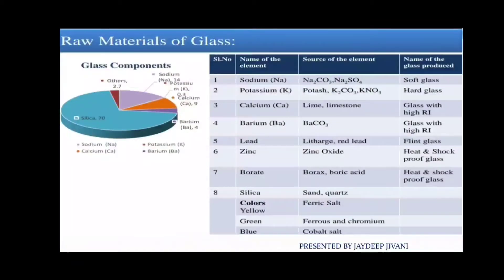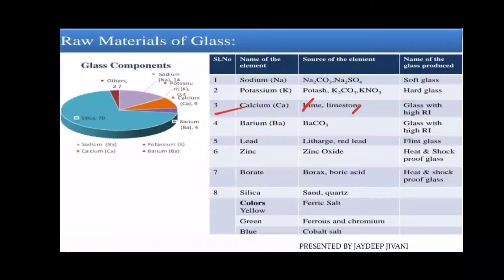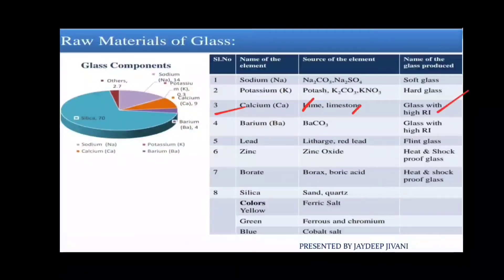The next element is calcium. Calcium is obtained from lime or limestone. Calcium is used for glass with a high refractive index — where a high refractive index is needed, calcium is used.